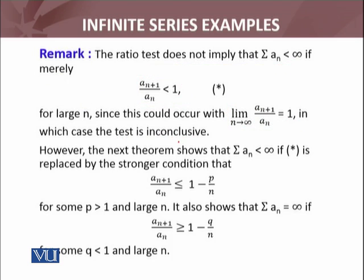However, the next theorem shows that Σa_n is convergent if this condition is replaced by a stronger condition, which is: a_{n+1}/a_n ≤ 1 - p/n, where p is some number greater than 1, and in the next theorem you will see this form written more conveniently.